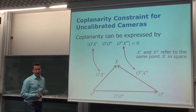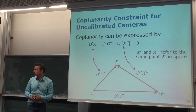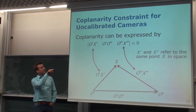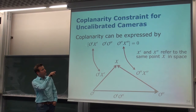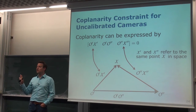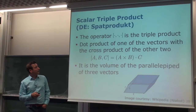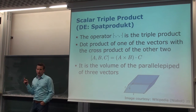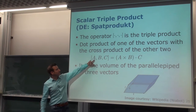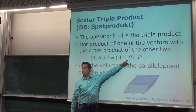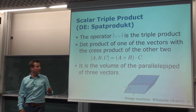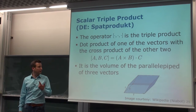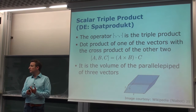This can be described with what is called the scalar triple product — Spatprodukt in German — which equals zero if the three vectors lie in one plane. It consists of three vectors: it is defined as the cross product of A and B, then the dot product of the result with C. Geometrically, this computes the vector orthogonal to A and B, then takes the dot product with the third vector C.